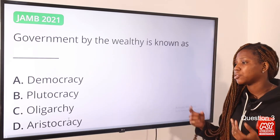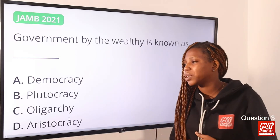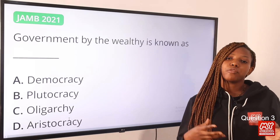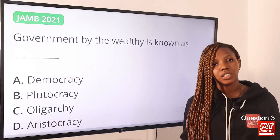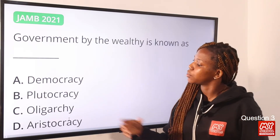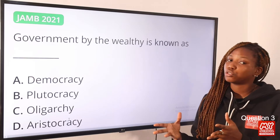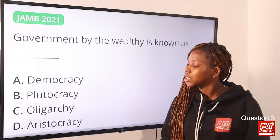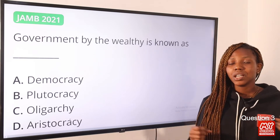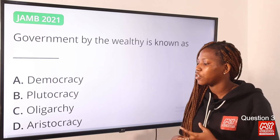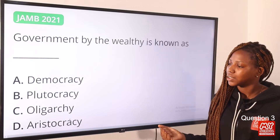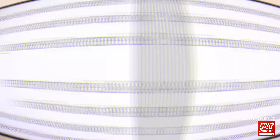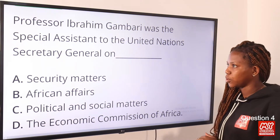Question three: Government by the wealthy is known as — the answer is plutocracy. Plutocracy is the form of government by the wealthy. Democracy is a form of government in which the people have the authority to choose their government officials. Oligarchy means power vested in the hands of a few. Aristocracy is government by the noble or the best. So option B, plutocracy, is the answer.